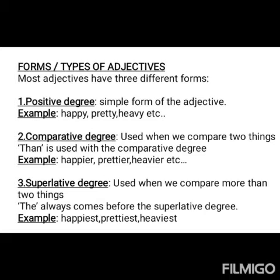To recap: there are three types of adjectives — positive, comparative, and superlative. Positive degree is the simple form of the adjective; examples: happy, pretty, heavy. Comparative degree is used when we compare two things, 'than' is used; examples: happier, prettier, heavier. Superlative degree is used when we compare more than two things, 'the' always comes before it; examples: happiest, prettiest, heaviest.